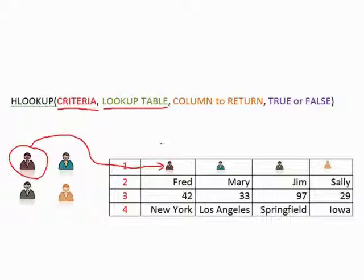The third part of our HLOOKUP is now treated as column to return when it should really be row to return. Because we're looking up our little guy in red in the first row. And we then look down the column to find the row that you're after. So in here you would just put a reference. Three, for example, would return his age of 42.